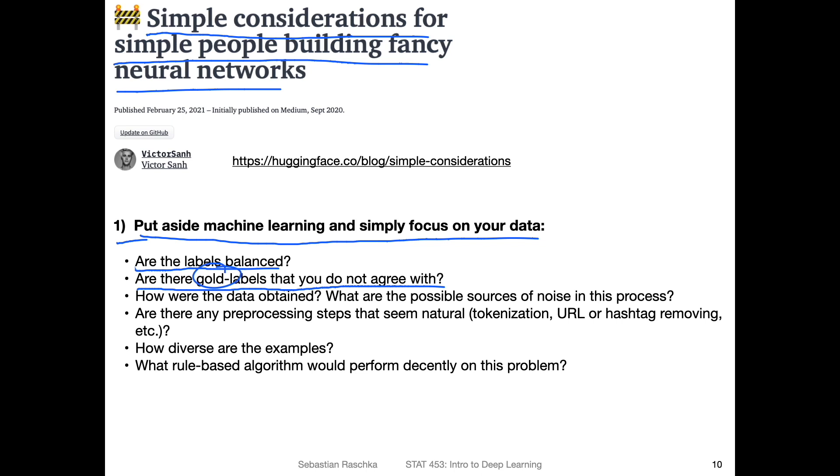Are there other gold labels that you don't agree with? Gold labels here means ground truth. So are the test set or training set labels that are provided making sense? Are there some maybe that are wrong? Do you agree with them? Then also it's always useful to know how the data was obtained. For example, there could be possible sources of noise in this process. I can tell you an anecdote. For example, there was a face image dataset from IBM - I think it was called DIF or something like that. It was a face dataset shared by IBM. I applied to get access to this dataset and I was really excited to get it. But then I read the readme file and was actually pretty disappointed.